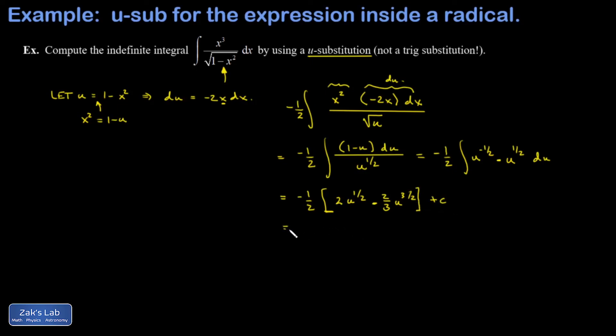Distribute the negative one half that kills those twos. It also makes my second term positive and my first term negative. So I'm going to write it as one third u to the three halves minus u to the one half plus c.